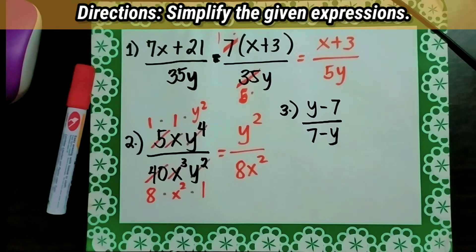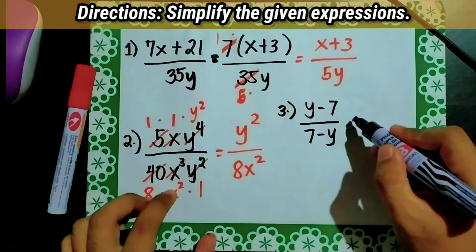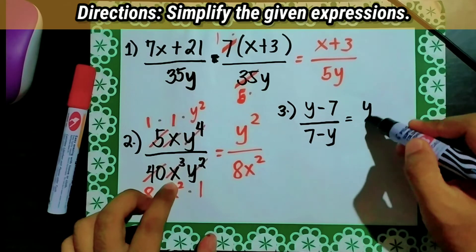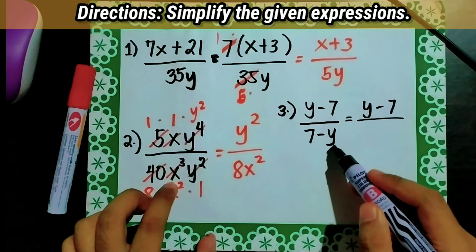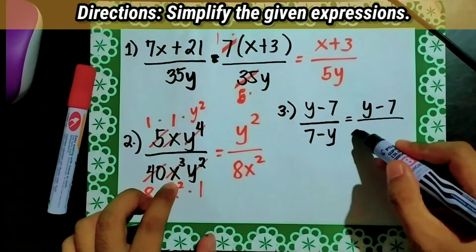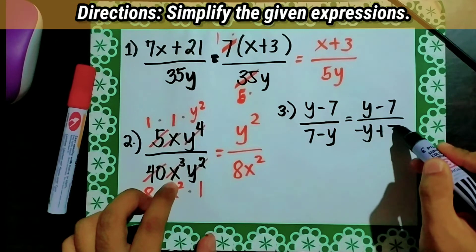Let's have number 3: y minus 7 over 7 minus y. What we'll do first is make the positions of the variable and the constant the same. So y minus 7 over — we move negative y to the first term — negative y plus 7.